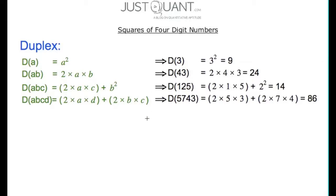For example, duplex of 3 is 3 squared, or 9. Duplex of 43 is 2 times 4 multiplied by 3, or 24. Duplex of 125 is 2 times 1 multiplied by 5 plus 2 squared, which is 14. And duplex of 5743 is 2 times 5 multiplied by 3 added to 2 times 7 multiplied by 4, or 86.